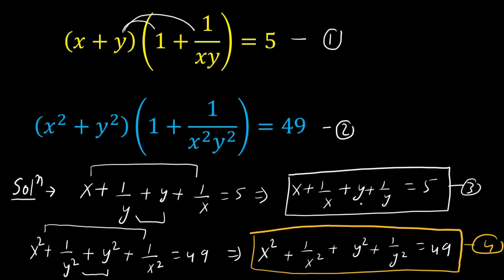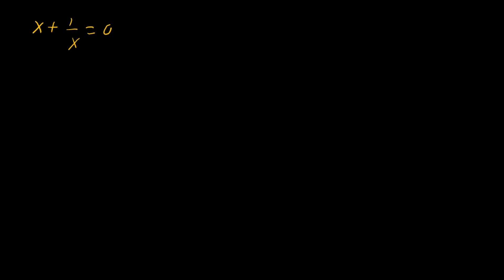Now look carefully. In equation 3 we have x + 1/x + y + 1/y, and in equation 4 we have x² + 1/x² + y² + 1/y². Let us substitute x + 1/x = a and y + 1/y = b.